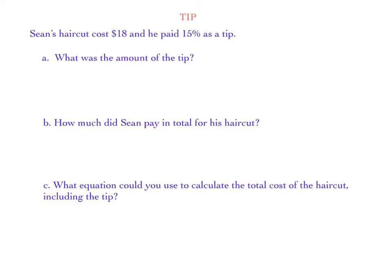Let's take a look at an example where we have to calculate the tip and then the total cost. Sean's haircut cost $18 and he paid 15% as a tip. First we want to find out the amount of the tip. I'm going to show you two ways for this, first with the proportion and then with the equation.